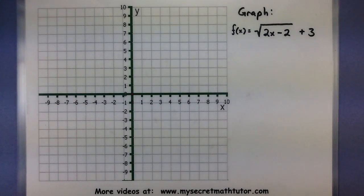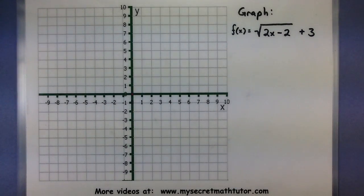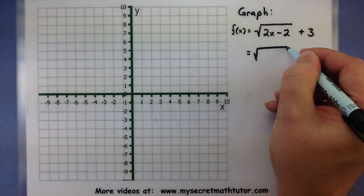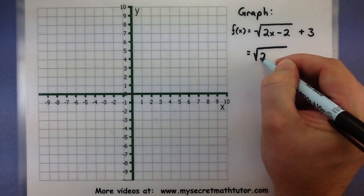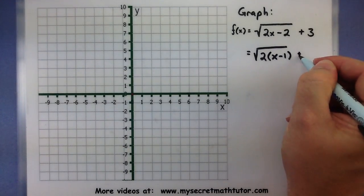So this first one I want to graph the square root of 2x minus 2 plus 3. And in order to properly read my transformations you want to factor out any numbers that are in front of that x. So let's just quickly rewrite this thing. So the square root if I factor out a 2 inside here we'll have 2 times the square root of (x - 1) plus 3.